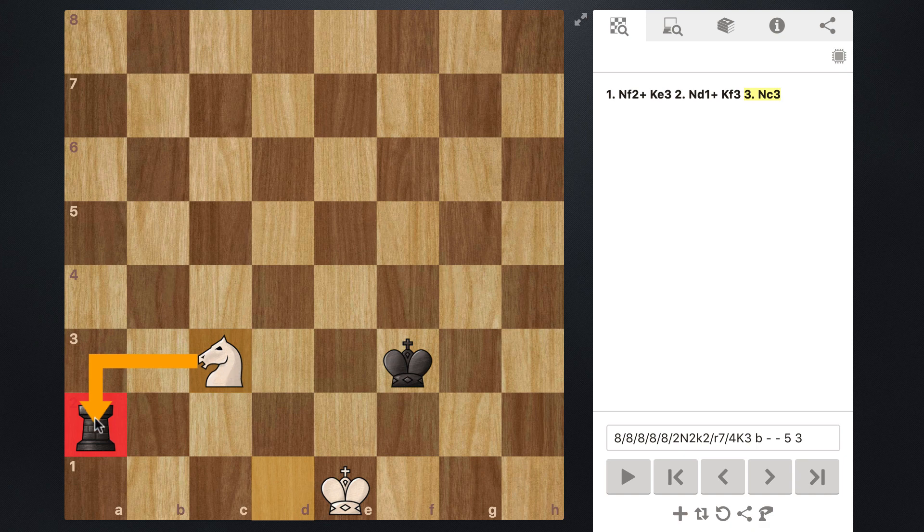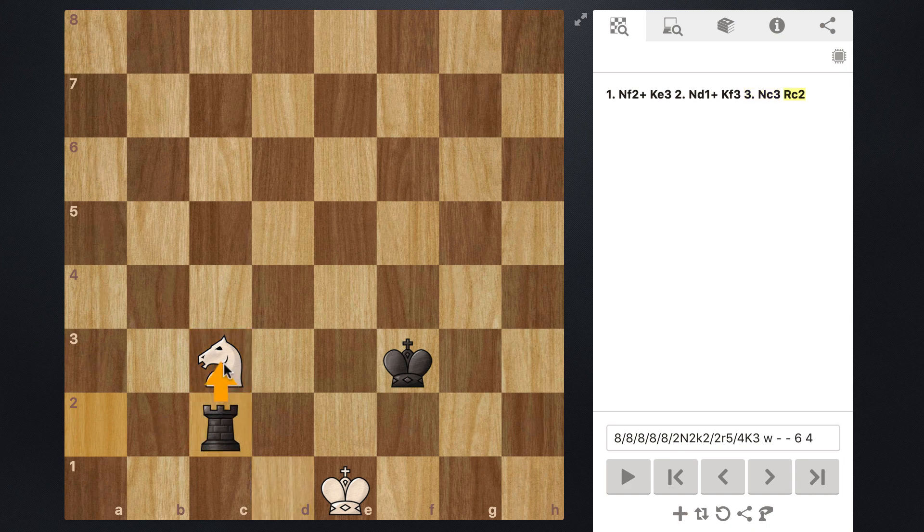So in this case, we move to c3, attacking the rook. The rook has to move away. Okay, so let's just go ahead and slide it over to c2, where they are going to be attacking our knight. And what we want to do here, again, nothing too exciting, just plop back to d1.